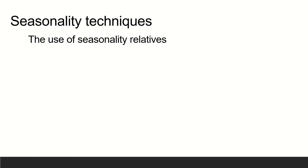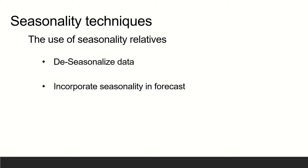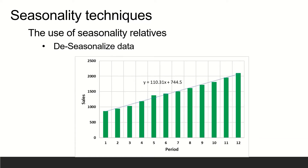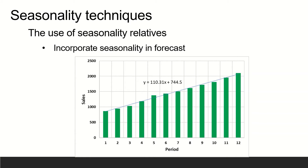Seasonal relatives are used in two different ways in forecasting. One way is to de-seasonalize data; the other way is to incorporate seasonality in a forecast. De-seasonalizing data is to remove the seasonal component from the data in order to get a clearer picture of the non-seasonal components, for example, trend. De-seasonalizing data is accomplished by dividing each data point by its corresponding seasonal relative. Incorporating seasonality in a forecast is useful when demand has both trend, or average, and seasonal components.